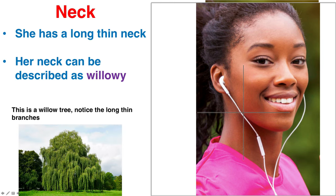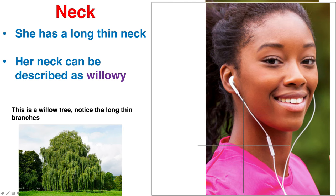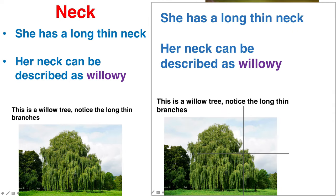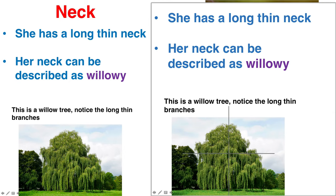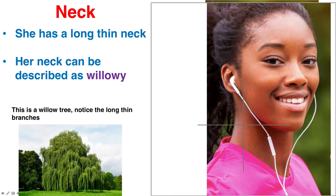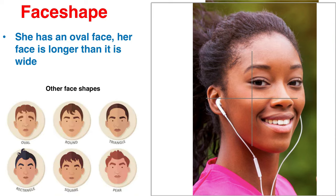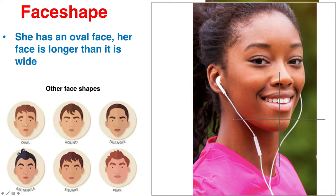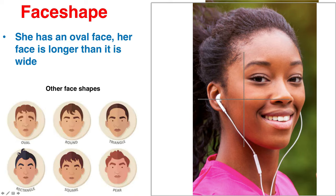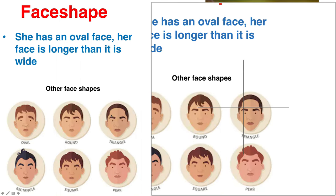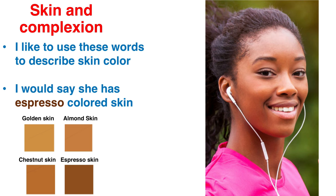Her neck is long and thin — a pretty good distance vertically and not very wide. Another way you could describe her neck is willowy. She has a nice willowy neck — that word is derived from the willow tree, with its long thin branches. She has an oval face shape: her head is longer from top to bottom than it is at the widest point side to side — a slight oval shaped head versus a round head or a triangle head. Former President Barack Obama had a very triangle shaped head.